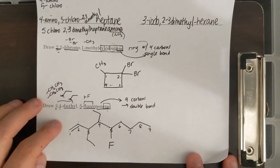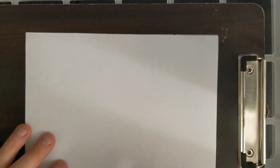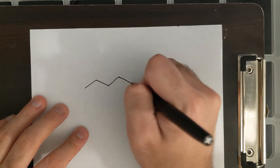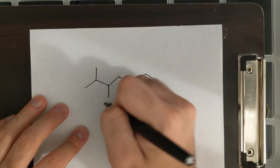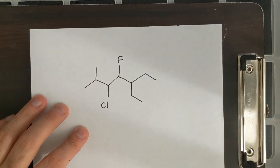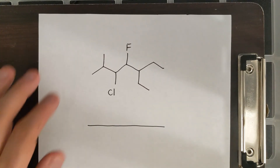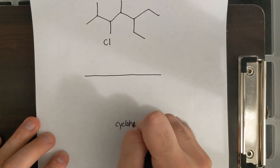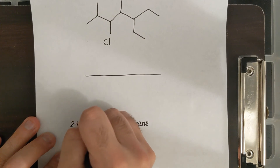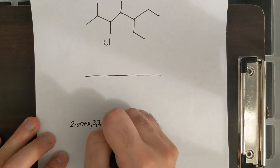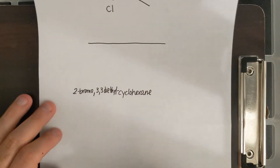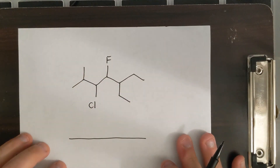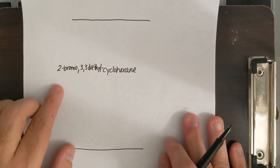So this is another set of practice questions. I want you to flip this over and start from scratch. Name the compound I'm drawing right now, and then show it to me by the end of class. Then I want you to draw this compound: 2-bromo-3,3-diethylcyclohexane. How would you draw that? After you get these notes, name the compound I just drew, and draw 2-bromo-3,3-diethylcyclohexane. I'm going to check this before you leave today.